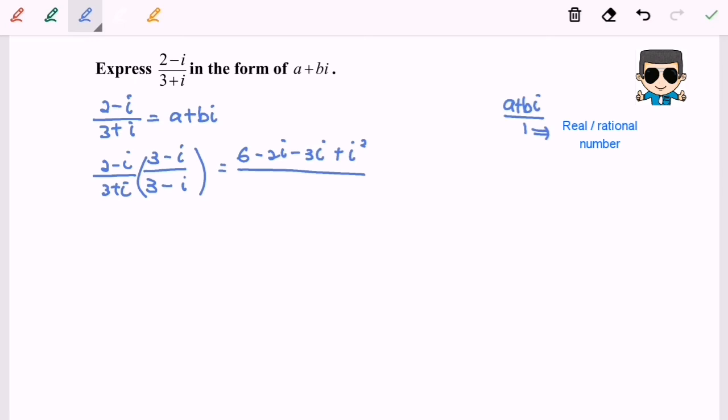So as we mentioned before, a plus bi multiplied with a minus bi is equal to a squared plus b squared. So in this case we can use the simplest formula, which is 3 squared plus 1 squared.